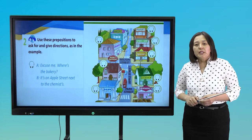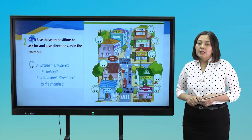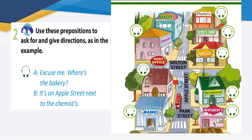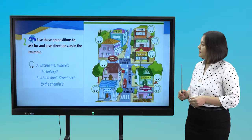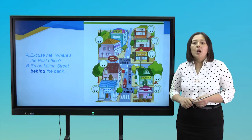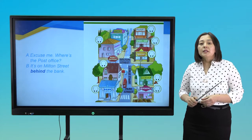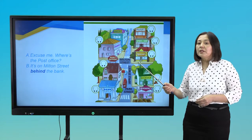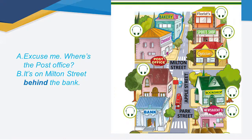Now that we have renewed our knowledge, it is time to practice. Use these prepositions to ask for and give directions. For example: Excuse me, where is the bakery? It is on Apple Street, next to the chemists. Excuse me, where is the post office? It is on Milton Street, behind the bank.